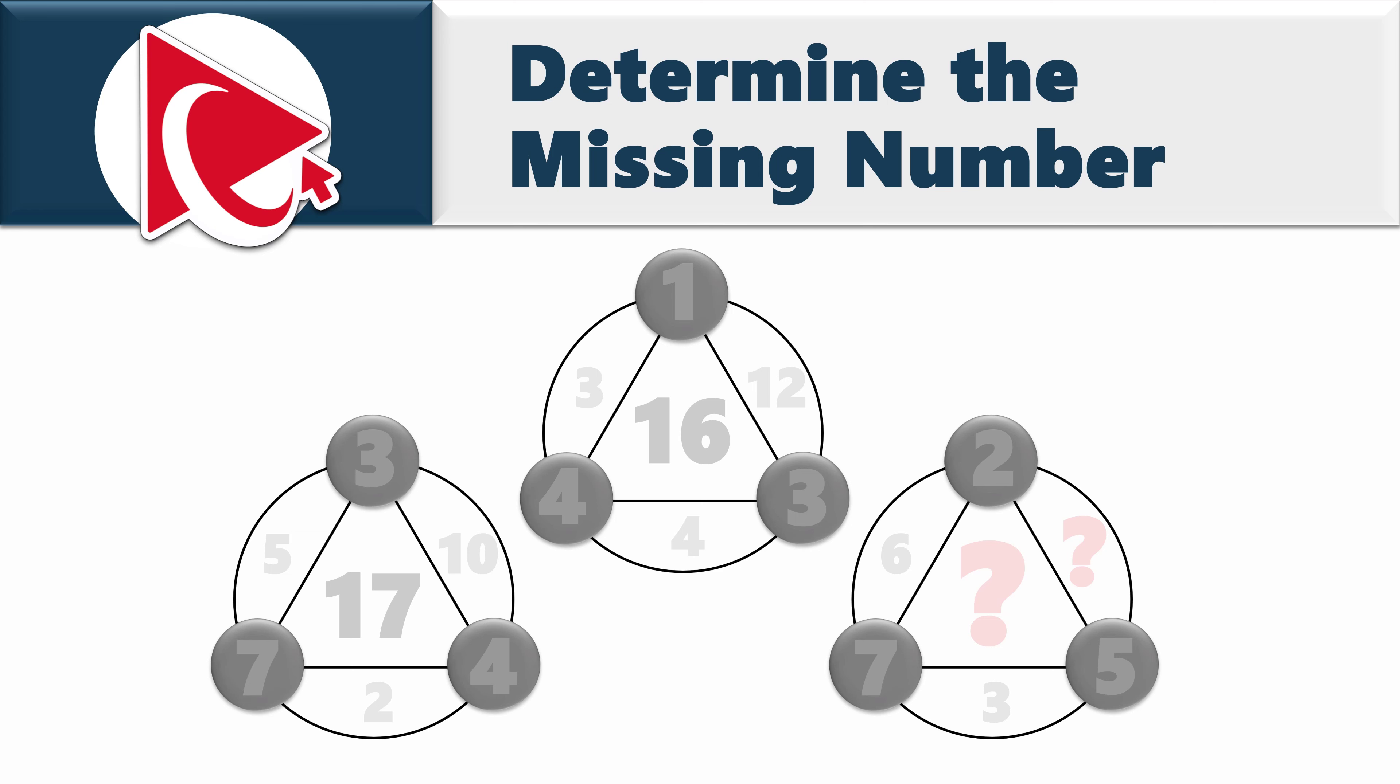You are presented with unusually looking shapes. Shapes have numbers inside. The middle number in the first shape is 17. Numbers in a circle are 4, 7, and 3. And numbers inside the large circle are 10, 2, and 5. In the second shape, the middle number is 16.